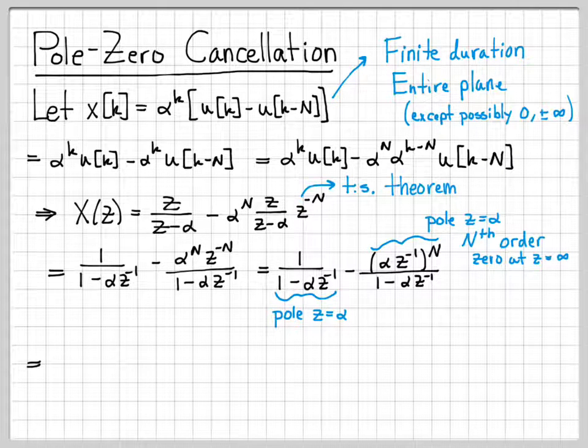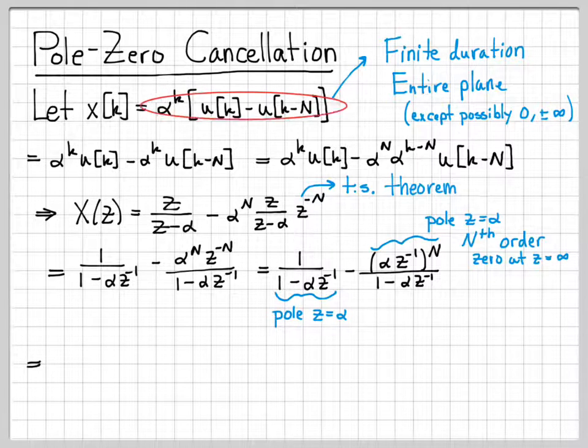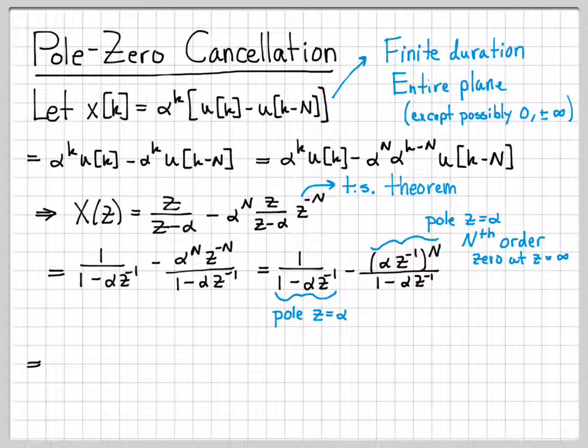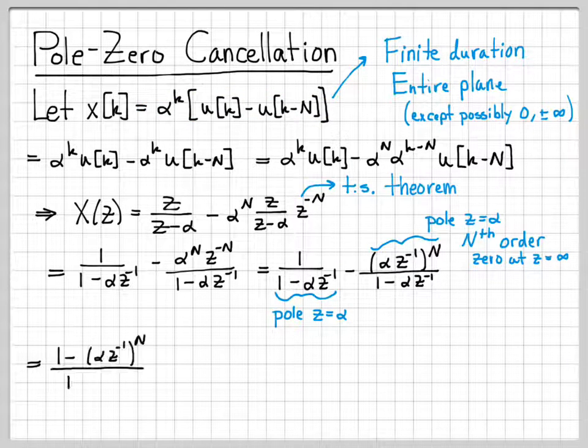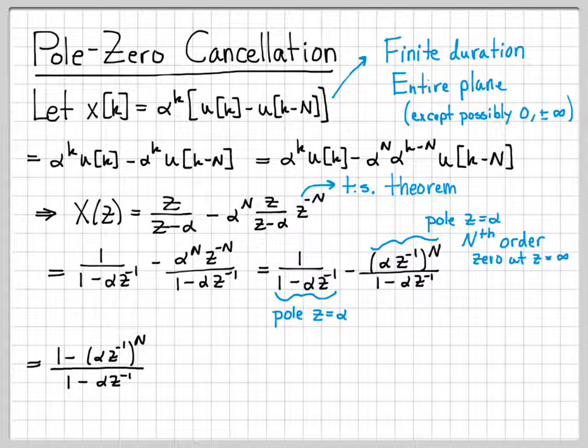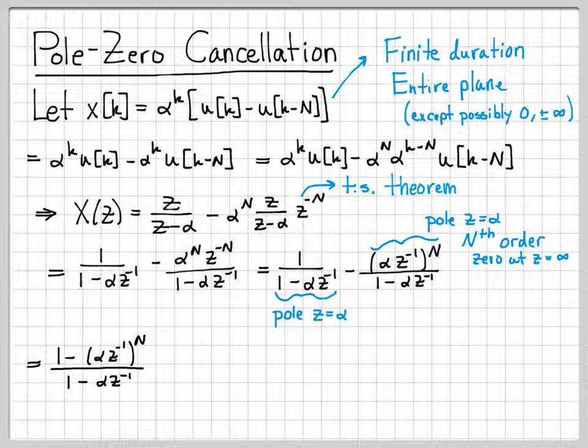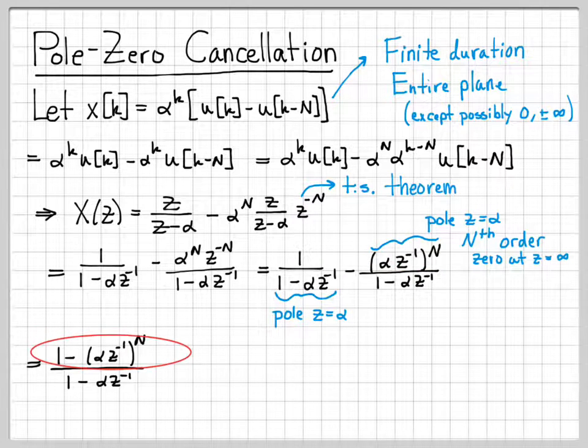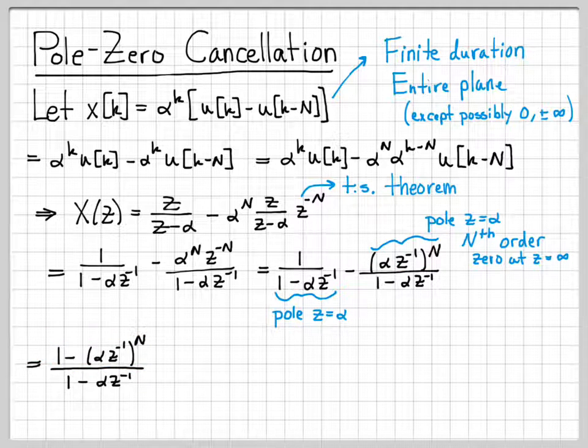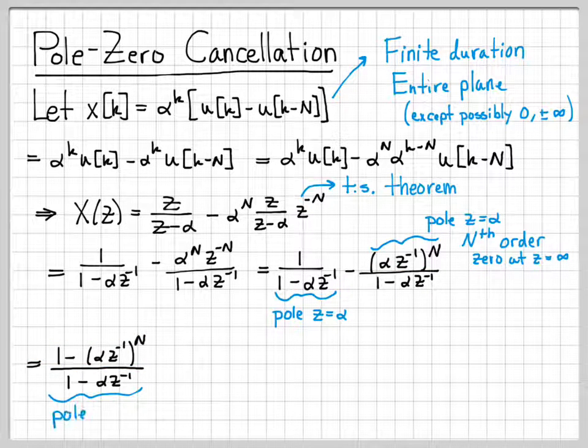It sounds like we have some poles and zeros in this, even though we know when we're all done, we have to be back to a finite length signal that doesn't have any poles except for possibly one spot. So if we do a combination here and get a common denominator, they already both have a common denominator. So I can just multiply and subtract off, and I end up with this numerator right here.